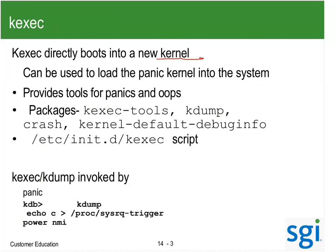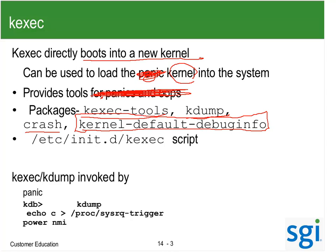It loads a second kernel into the system. In elaudo.conf, we talked about 'crash equals', which specifies where the second kernel gets loaded. It provides tools to get a dump when we get a panic or an oops. Key packages needed are: KExec tools, the KDump command, the crash command, and a debug info RPM. In older days we didn't need that, but with KDump, crash needs that debug info file. And there is a script for this.